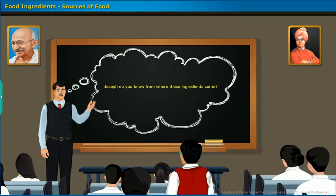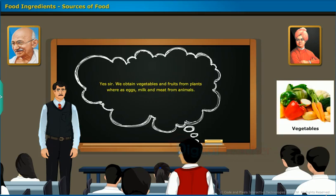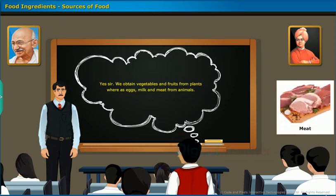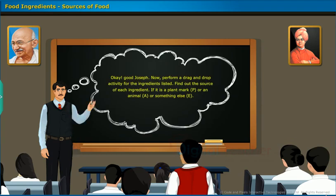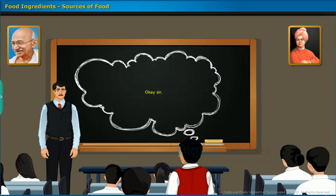Joseph, do you know from where these ingredients come? We obtain vegetables and fruits from plants, whereas eggs, milk and meat come from animals. Now perform a drag and drop activity for the ingredients listed. Find out the source of each ingredient — if it is a plant, mark P; an animal, mark A; or something else, mark E.